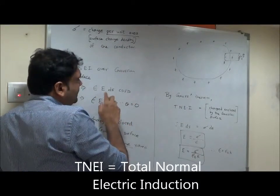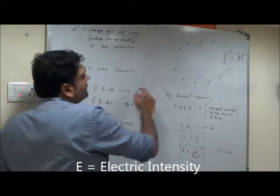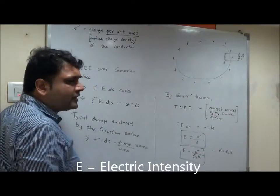Theta is zero, angle between E and DS is zero. So epsilon E DS it will be. Epsilon will be the permittivity of the medium surrounding the conductor.